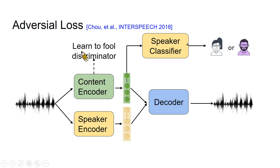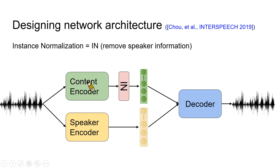Adversarial learning is a typical voice conversion method. It learns feature disentanglement by reversal learning — you train a speaker classifier on content embedding. The content encoder's job is to fool the discriminator, but at the same time fulfill the autoencoder objective. If the speaker classifier cannot classify any speaker on the content embedding, it means the content encoder cannot encode any speaker information. Instance normalization subtracts the embedding from its mean and divides by its standard deviation. It is proved that this design can remove style information, and in the audio domain, style information may be speaker information. It is also very successful in voice conversion.